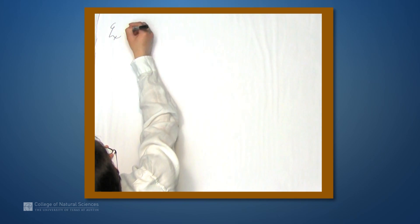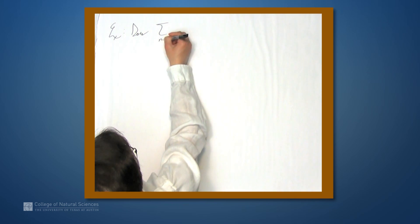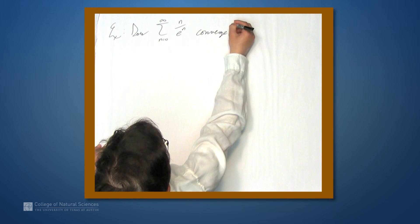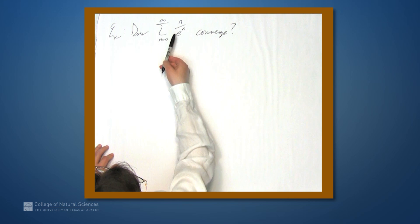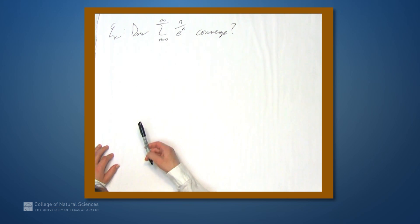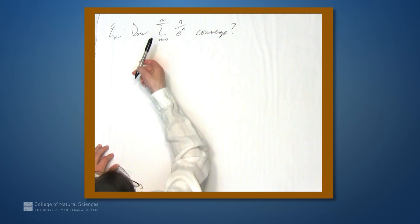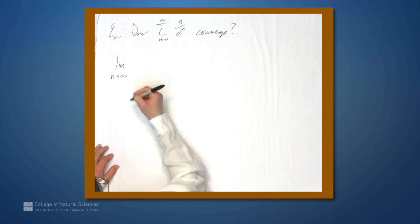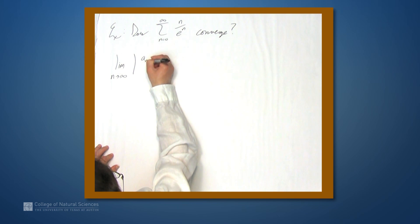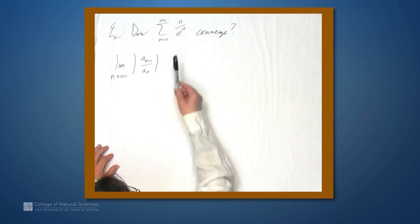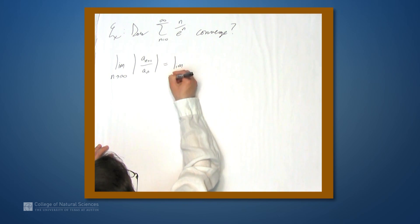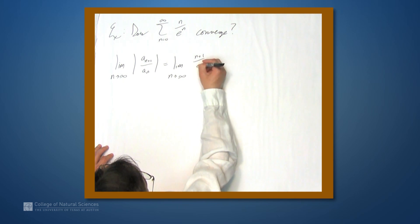Let's look at two examples. Does the sum from n equals 0 to infinity of n over e to the n converge? We know the behavior of this sequence: in the long run, e to the n is much larger than n, so these terms are going to 0. But does the denominator grow so much faster than the numerator that the actual series converges? We can use the ratio test to determine that. So we have the limit as n goes to infinity of the absolute value of a sub n plus 1 over a sub n. Since all these terms involve only positive quantities, we don't need the absolute values when we substitute, so we get the limit as n approaches infinity of n plus 1 over e to the n plus 1.